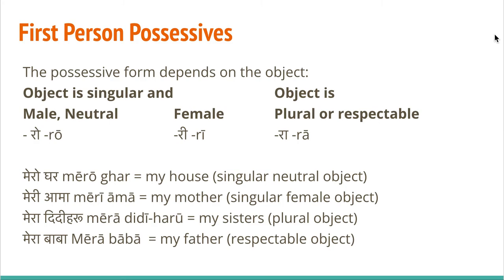The possessive form with 'ro' is used when the object is singular and male or neutral — so 'mero' or 'hamro'. If the object is female, the possessive form takes 're': 'meri' or 'hamri'. Similarly, if the object is plural or the person deserves a good amount of respect, we use 'ra': 'mera' or 'hamra'.